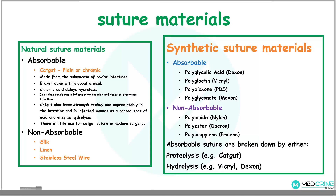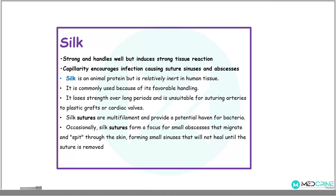It is important to know that absorbable sutures are broken down by proteolysis processes, for example catgut, or hydrolysis processes, such as vicryl and dexon. Silk is a strong suture material that handles well but induces a strong tissue reaction, and the capillarity of this material encourages infection, causing suture sinuses and abscesses. It is an animal protein, relatively inert in human tissues, and commonly used because of its favorable handling properties. Silk loses strength over long periods of time and is unsuitable for suturing arteries to plastic grafts and prosthetic cardiac valves. Silk sutures are multifilament in nature, providing a potential haven for bacteria. Occasionally, silk sutures form a focus of small abscesses that migrate and spit through the skin, forming small sinuses that will not heal until the suture is removed.